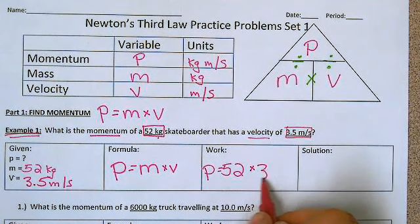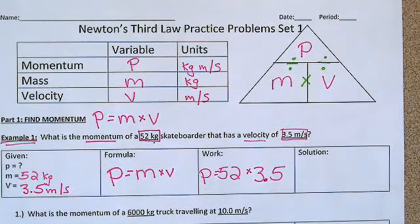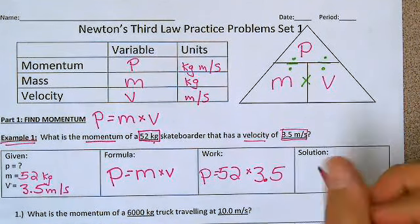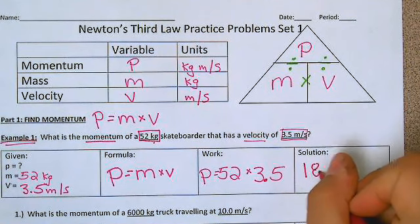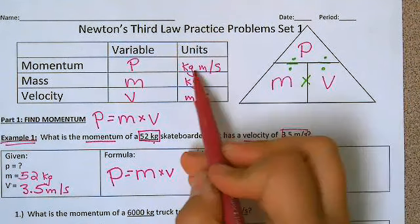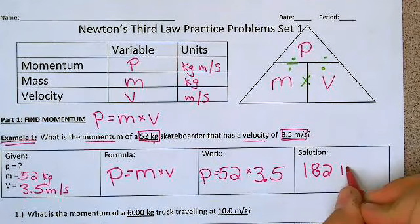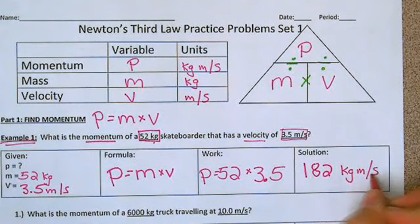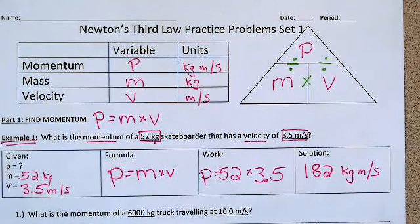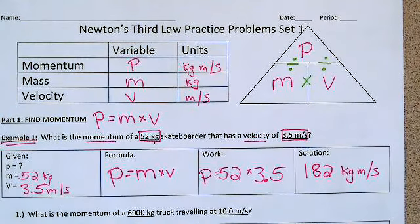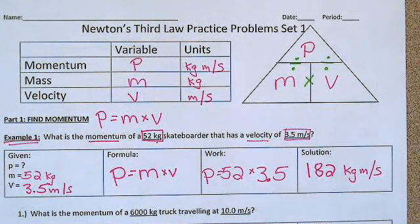So we're going to do 52 times 3.5 and put that in our calculator to get our final answer. That gives us 182, and the units for momentum are kilograms meters per second. Pause the video and do questions one, two, three, and four, all using this same formula.